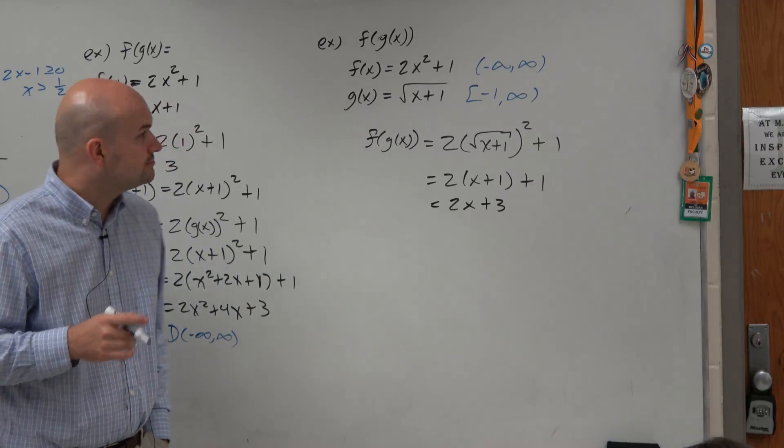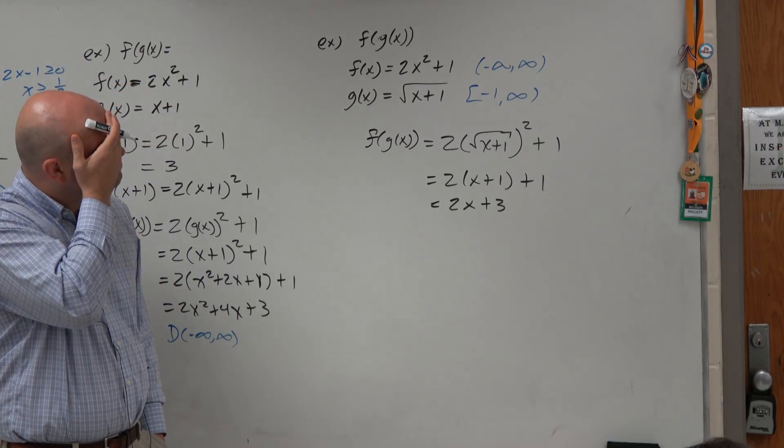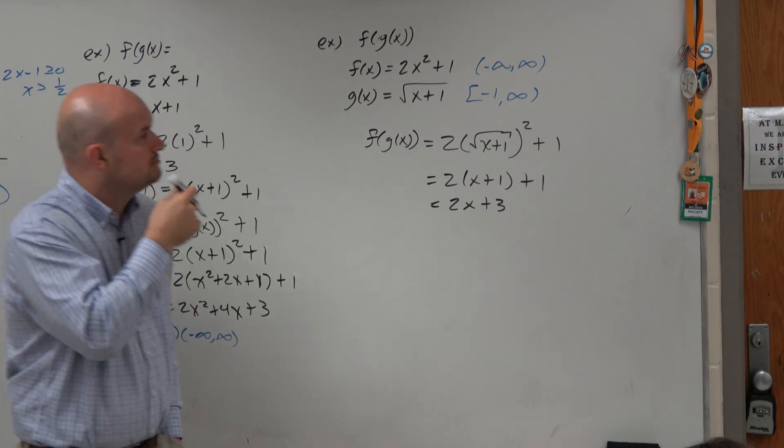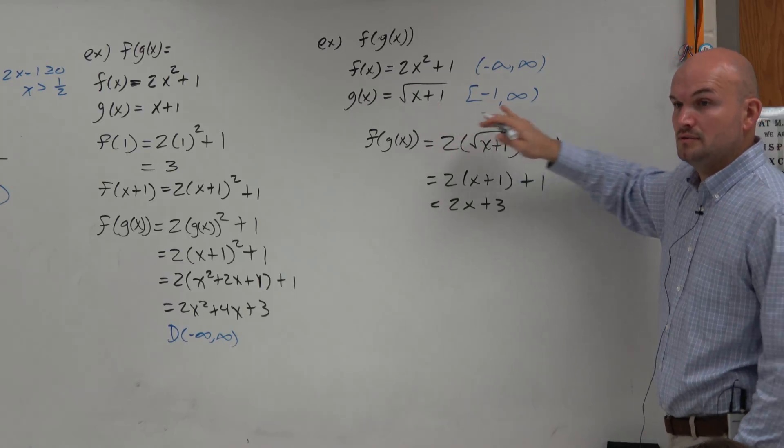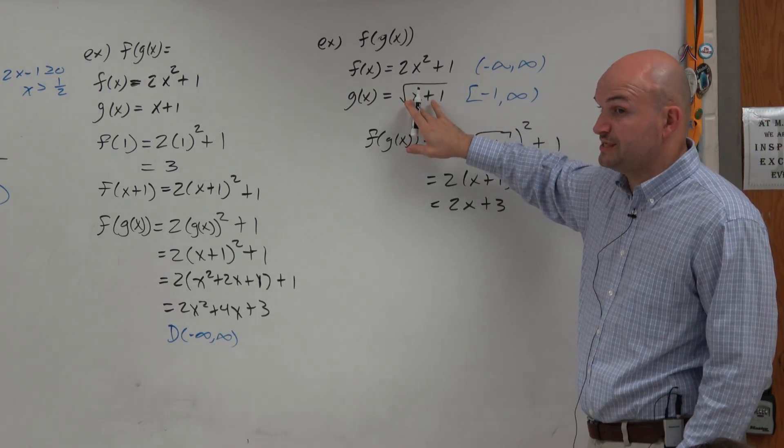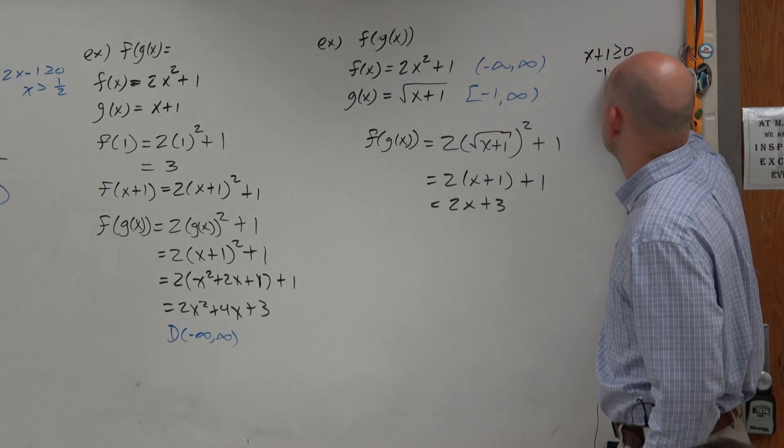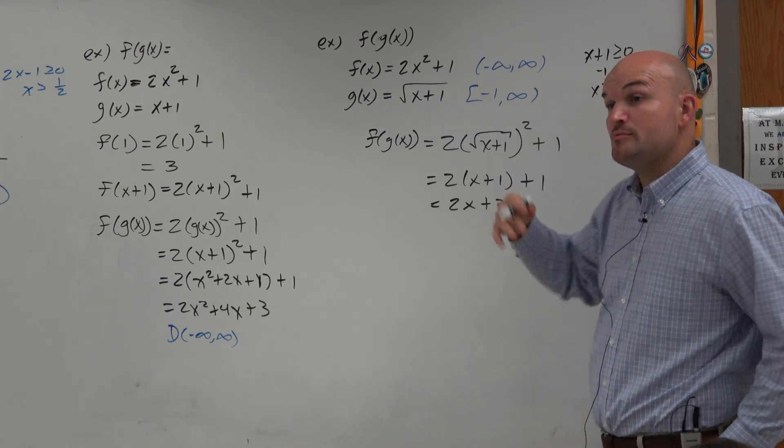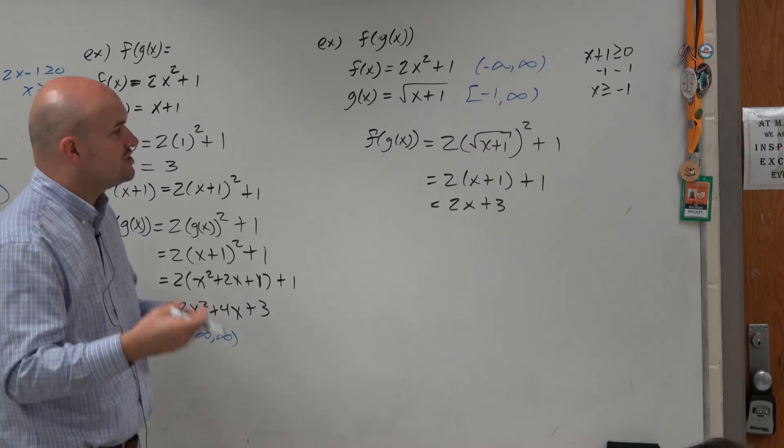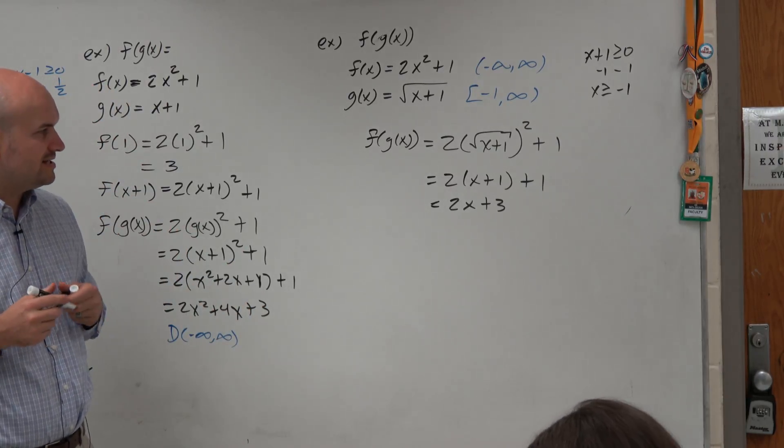A student asks about the domain. If it was negative 1, would that be a problem? No, it can be 0. You can take the square root of 0; square root of 0 is just 0. So again, the math would be x plus 1 is greater than or equal to 0, so x has to be greater than or equal to negative 1. Just remember, for radicals, we set the radicand greater than or equal to 0. For rational functions, we set the denominator equal to 0 to identify the values that make it 0.